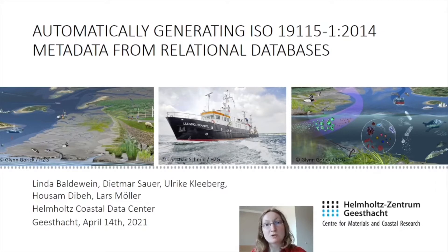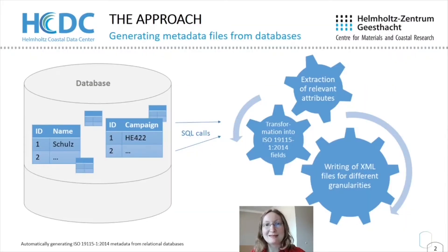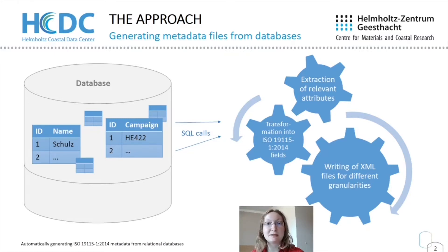My colleagues of the Helmholtz Coastal Data Center and I would like to introduce to you how we automatically generate ISO metadata from relational databases. A lot of sample metadata is stored in relational databases from which it can be extracted via SQL calls. The relevant attributes can then be transformed through mapping tables into the ISO fields. In the end, XML metadata files for different granularities can be written.